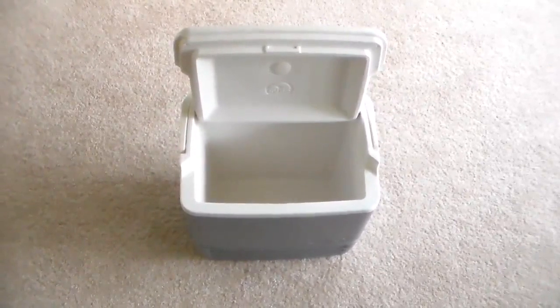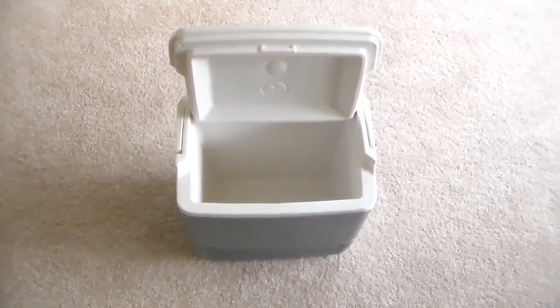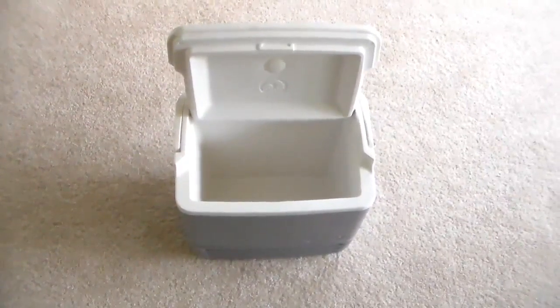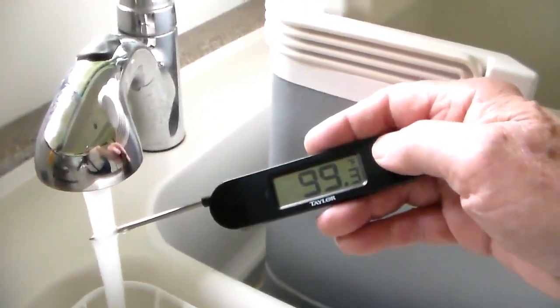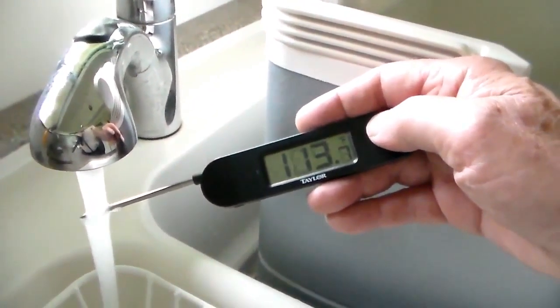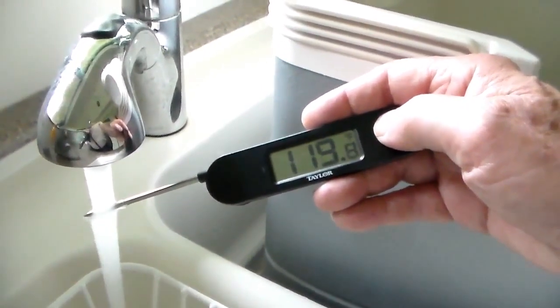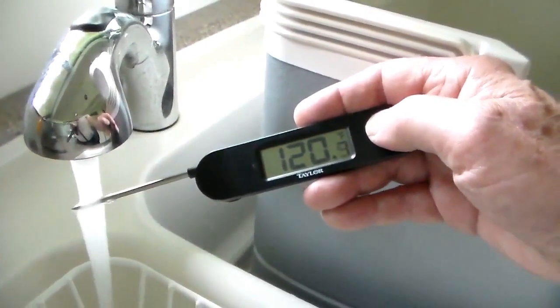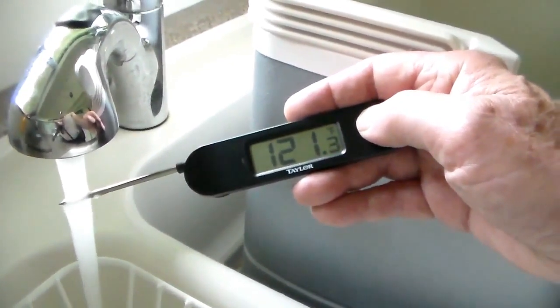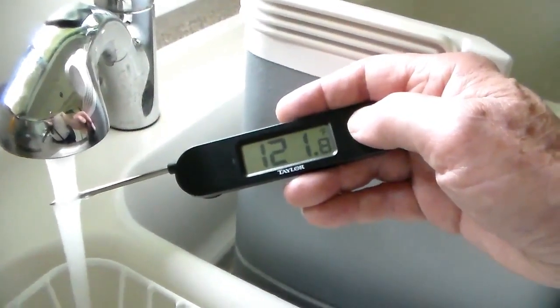Place it in the bottom and put the yogurt containers with the milk and starter inside. With the lid closed at room temperature, this will hold for about five hours. Now we're going to just check the temperature of the hot water coming from my house. It's about 121, which is perfect for our application.